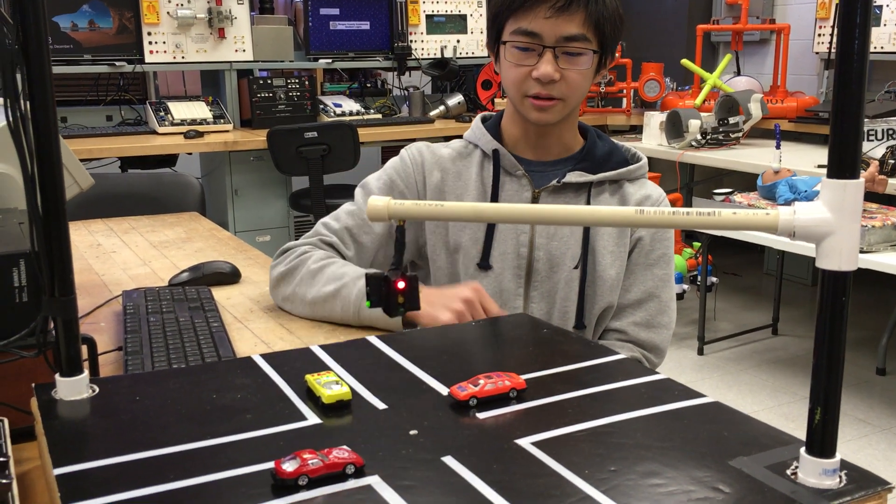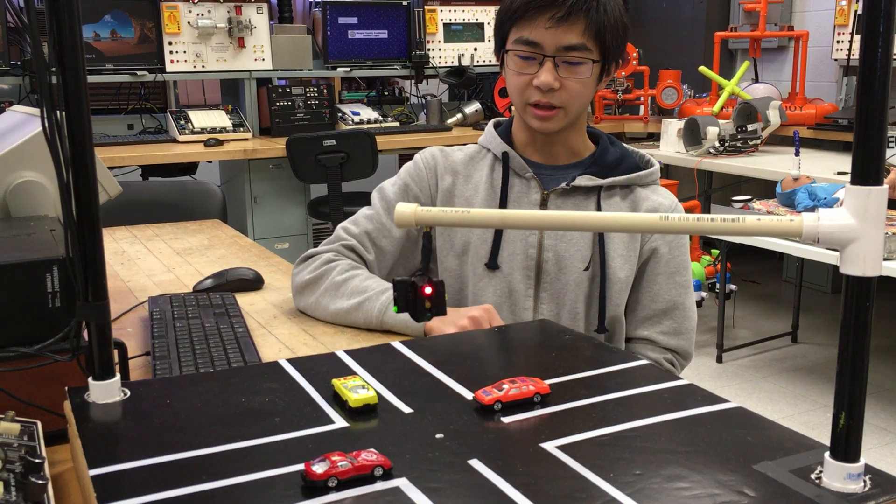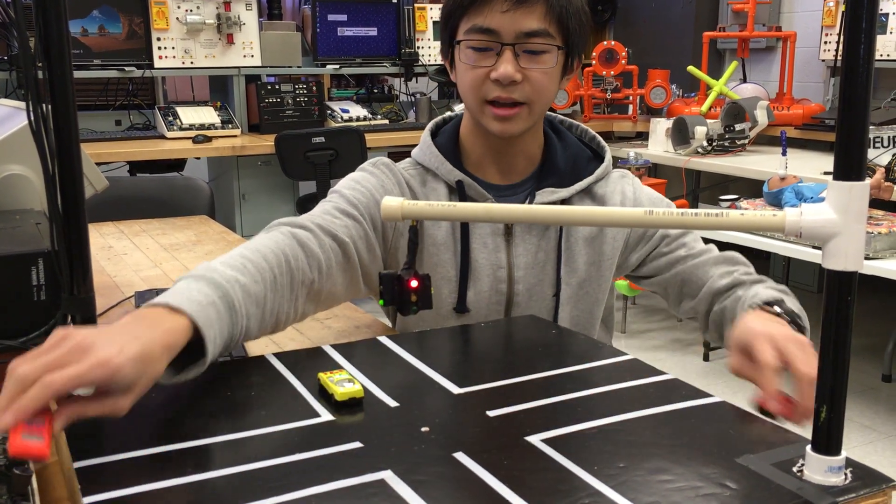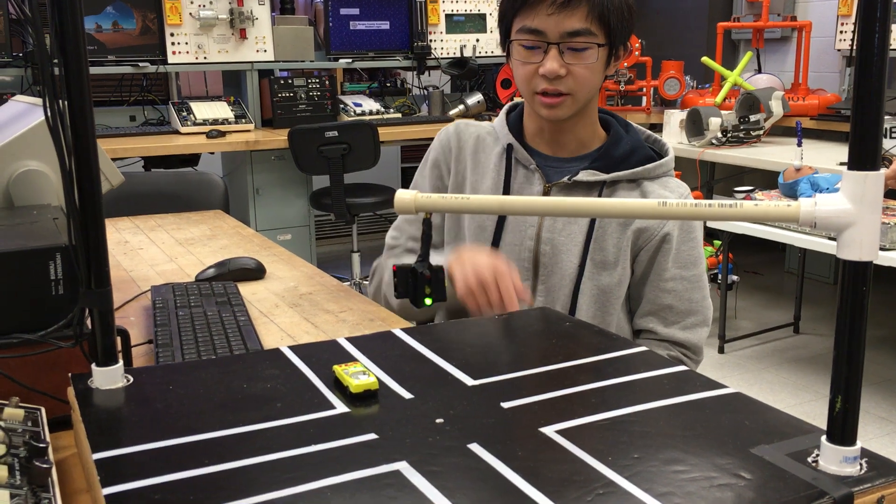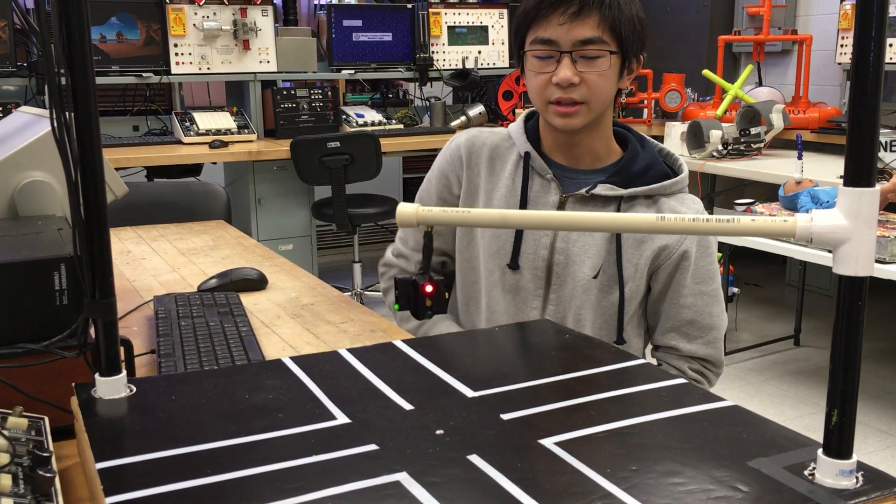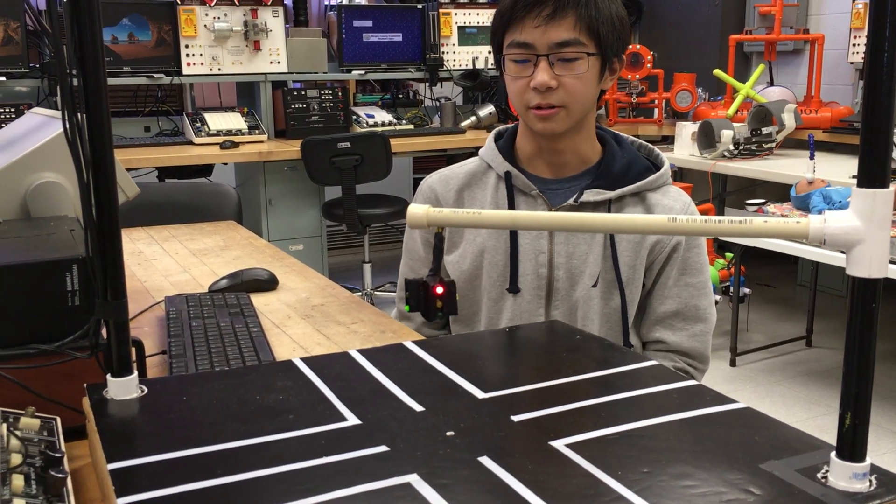As you can see here, the traffic light is green for the lane with two cars in it. Once the cars pass, the light changes to let the other car through. This then repeats for any other cars that are coming onto the road.